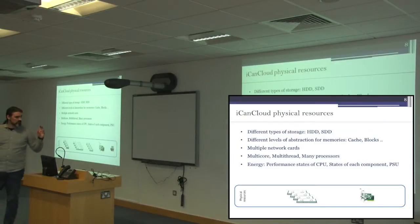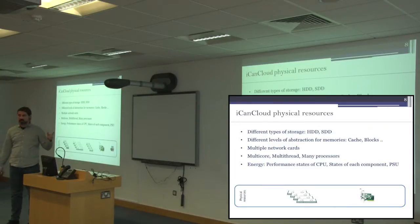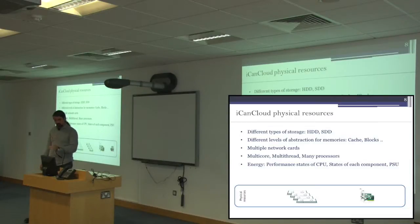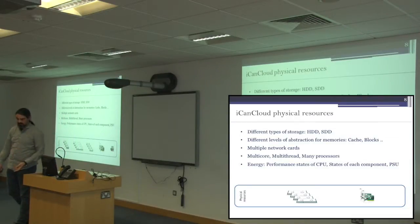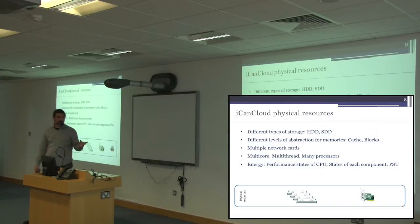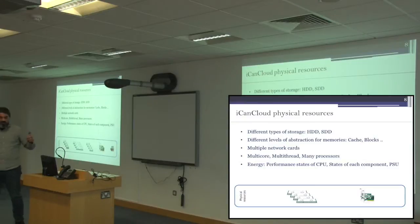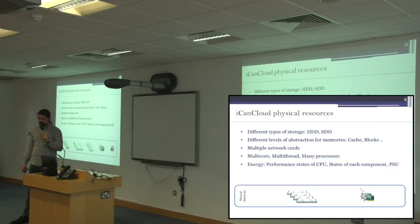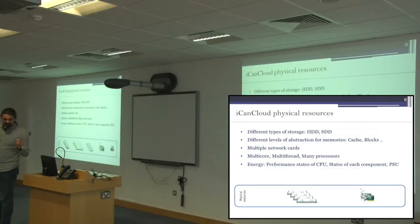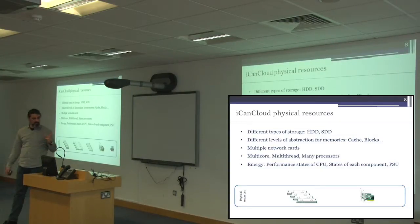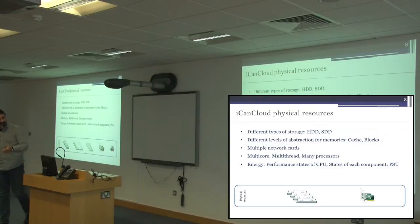In the physical resources, iCanCloud models different types of disks — HDDs and SSDs — different types of memories, and CPUs with different numbers of cores. CPU models include models for cores, so it's possible to create CPUs with different numbers of threads, as well as network cards. All components have energy consumption embedded in them. Energy is modeled by distinguishing between different states — for example, the performance states of a CPU are governed by the operating system, which changes CPU states depending on the load.